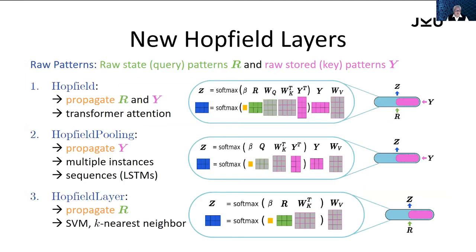Therefore, we now can build layers which are the transformer attention, we can build layers which are pooling layers, they can do analyzing sequences or multiple instance learning, we can build layers which even can build an SVM, support vector machine model, or K-nearest neighbor model.